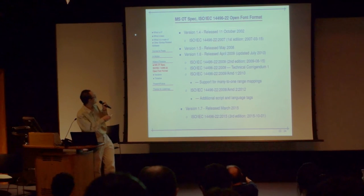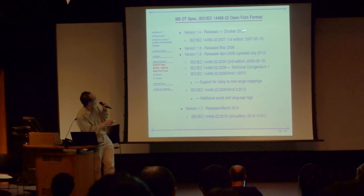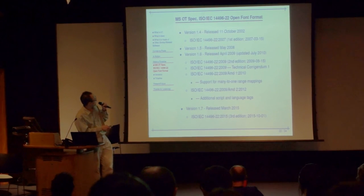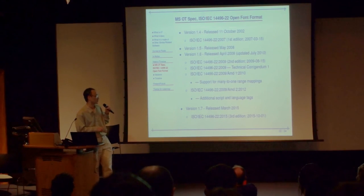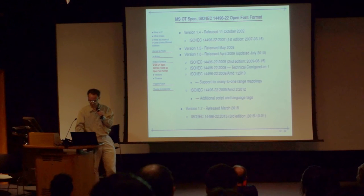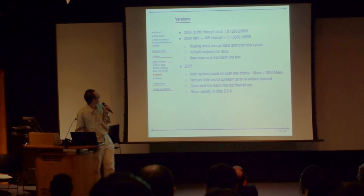For the history timeline: Microsoft produced the OpenType spec and submitted it to the ISO committee, and the first version of the font validator basically coincides with that timeline. The second update of the ISO specification coincides with the internal 2009 update. Last year there was a massive update to the ISO specification, so that's the third prompt of the whole development.